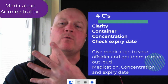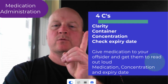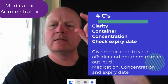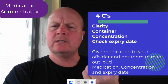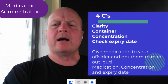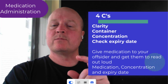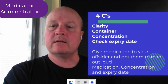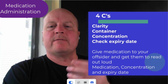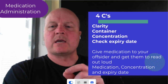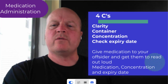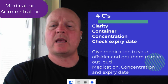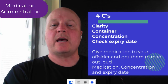Then we've done our five rights and we want to do our four C's. The first one is clarity — hold the ampoule up to the light. Is it clear or is it cloudy? Is there any debris or foreign substances in it? And then we want to check the container — this means the physical thing the medication is in, not the box it comes in. Is it being tampered with? Is the seal intact?